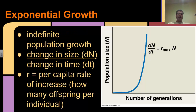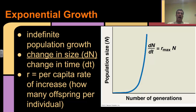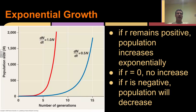There are two main types of growth that can occur. We've got exponential growth, which is indefinite population growth - it just keeps going. The way we calculate that is the growth rate is the change in size, which is dN, over the change in time, which is dT. That gives us our R, which is the per capita - meaning per individual - rate of increase: basically how many offspring there are per individual. If we have a positive R, the population is going to be increasing. If R equals zero, there's no increase. And if R is negative, the population is going to be decreasing.